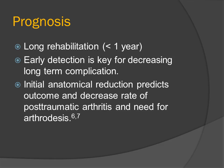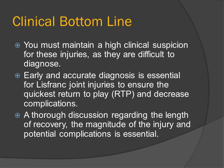Rehabilitation can take up to one full year. If the patient is an athlete with a stage three injury and plays a high impact sport, it could affect their long-term career, and early detection is key for decreasing long-term complications. Initial anatomical reduction predicts outcomes and decreases the rate of post-traumatic arthritis and need for further surgery. Clinicians should maintain a high clinical suspicion for this injury as it is difficult to diagnose, and early and accurate diagnosis is essential to increase chances of returning to prior level of activity.